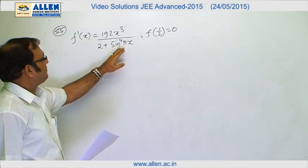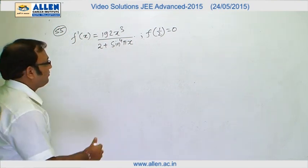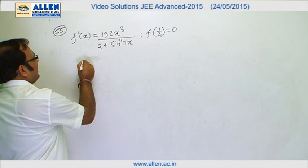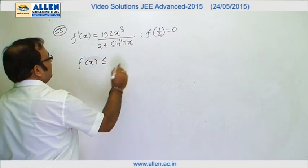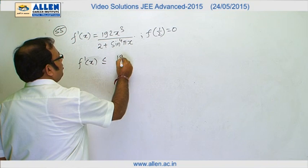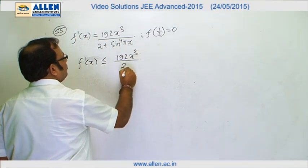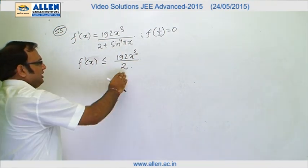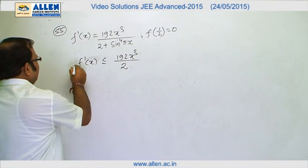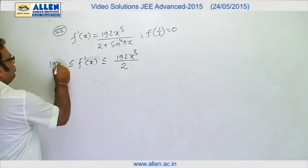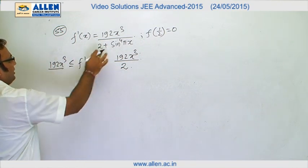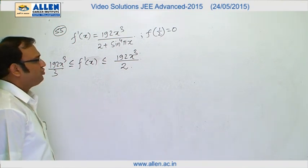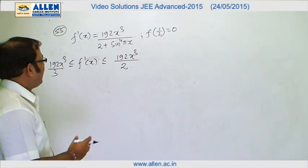To do this, I bound f'(x) with two functions. We can say f'(x) ≤ 192x³/2, taking the least value of the denominator so the expression is greater. And f'(x) ≥ 192x³/3, taking the maximum value of the denominator. So these two functions bound our f'(x).